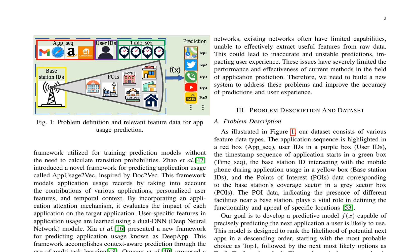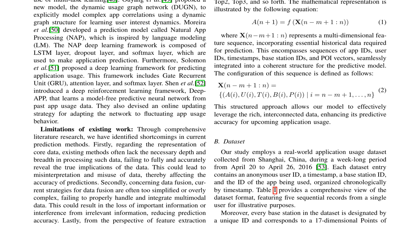The mathematical representation of the model is given as a_{n+1} = f(x_{n-m+1:n}), where x_{n-m+1:n} represents a multi-dimensional feature sequence incorporating essential historical data required for prediction. This sequence includes sequences of app IDs, user IDs, timestamps, base station IDs, and points of interest (POI) vectors, integrated into a coherent structure for the predictive model.